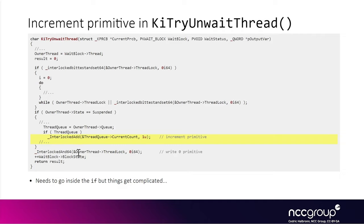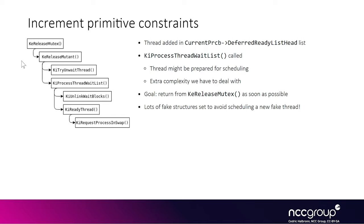We need to set lots of fields in the fake KTHREAD structure so the owner thread is valid, because of all the stuff happening after the increment primitive. It's also worth noting that we might want to turn this increment primitive into an arbitrary write primitive so we can write any value to any address. One way to do that would be to chain several fake increment enlistments and trigger the increment primitive multiple times, allowing us to write any value to any address we want.